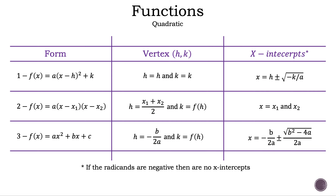Now, let's look at the forms we could have for a quadratic function. One is the vertex form. Two is the factored form, or intercept form. And three is the standard form. There are formulas here, but you don't have to memorize them. If you know your definitions and practice a bit, finding the vertex and x-intercepts will become second nature.